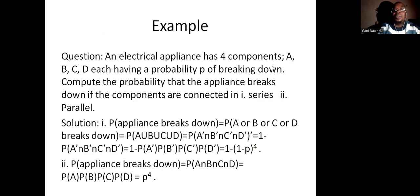I have an example here. An appliance has four components A, B, C, D, each having probability P of breaking down. Find the probability that the appliance breaks down if the components are connected in series or parallel. If the components are connected in series, then the appliance will break down if component A breaks down or B breaks down or C breaks down or D breaks down. And that is probability of A union B union C union D.